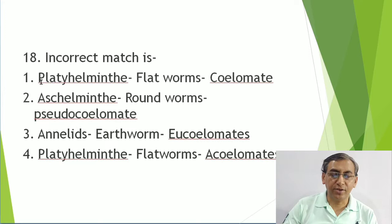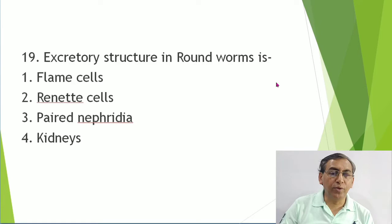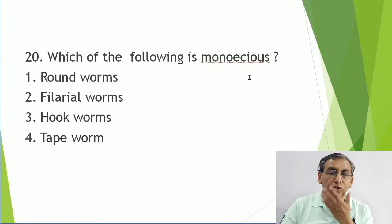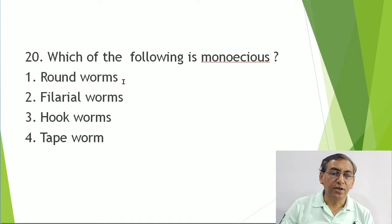Excretory structures: roundworms have renette cells, Platyhelminthes and Cephalochordata have flame cells, earthworms have nephridia, and chordates have kidneys. Regarding monoecious - monoecious means hermaphrodite, where male and female sexes are united. Roundworms are dioecious, hookworms are dioecious, filarial worms are dioecious, but tapeworms are monoecious.